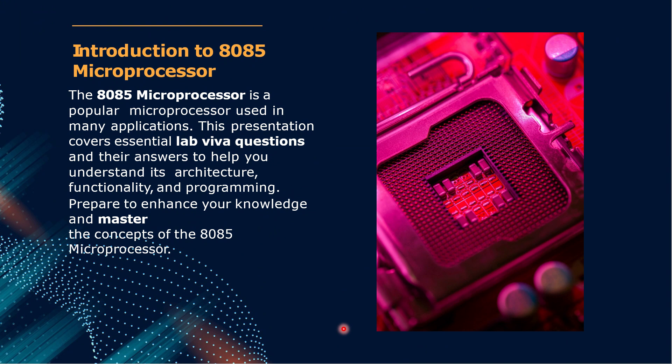Before diving into the questions, let's quickly revise the basics. The 8085 microprocessor is an 8-bit microprocessor developed by Intel, widely used in many embedded systems and microcontroller applications. It has an 8-bit data bus and a 16-bit address bus, which allows addressing 64 KB of memory. The microprocessor also operates on a 5V power supply.